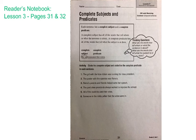We've worked on simple subjects and simple predicates, but when we talk about complete subject and complete predicate, the complete subject is everything that describes or tells who or what the sentence is about. And the complete predicate has all of the words that tell what the subject is or what the subject does. In this activity, you're going to be circling the complete subject in the sentence and underlining the complete predicate.